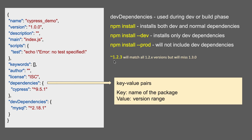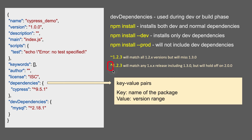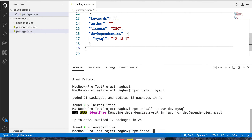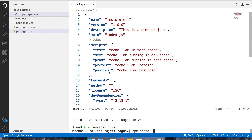If you see a tilde character before the version — for example ~1.2.3 — it will match all versions 1.2.x and will not go up to 1.3.0. So it installs the latest patch in that minor range. But if you use the caret symbol — like ^1.2.3 — it will match anything in the range 1.x.x, so npm install will get the latest version in the 1.x.x range. This is the difference between using tilde and caret symbols in your package.json.